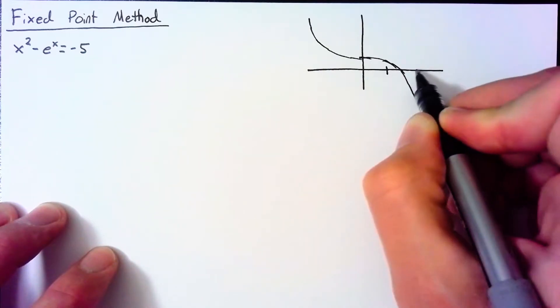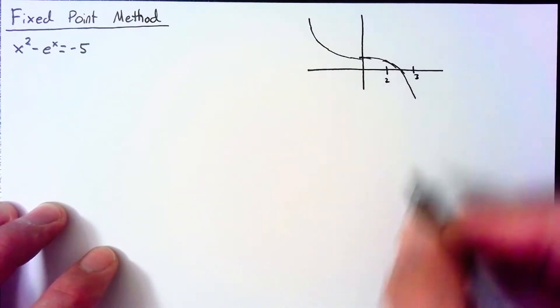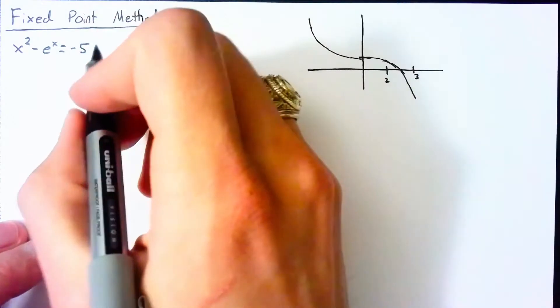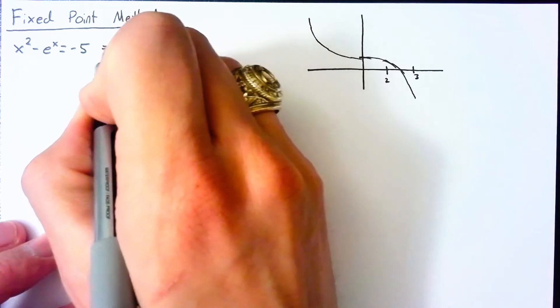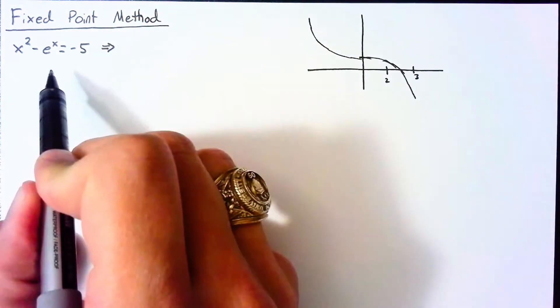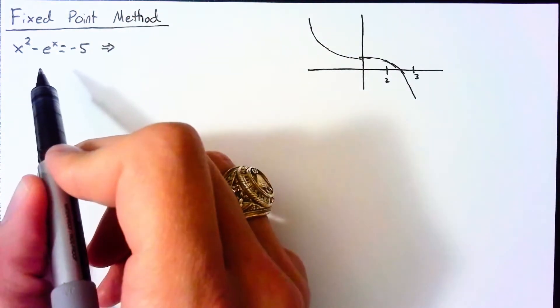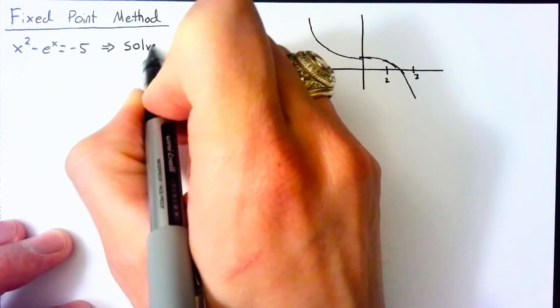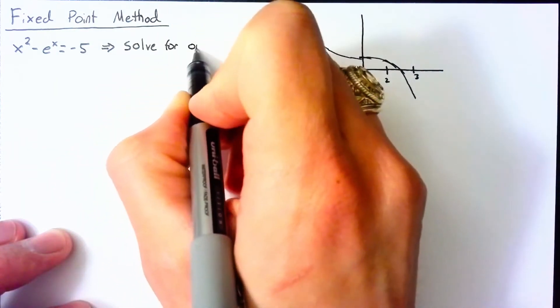And we know that our solution is somewhere between 2 and 3 in x. So in the most general sense, here's how we determine a fixed point method.